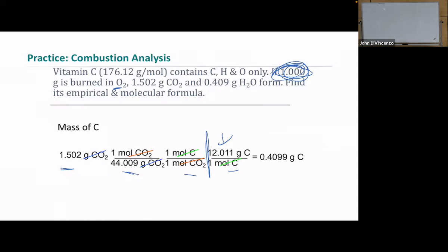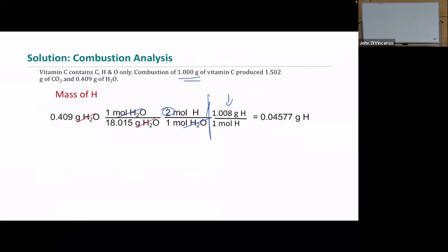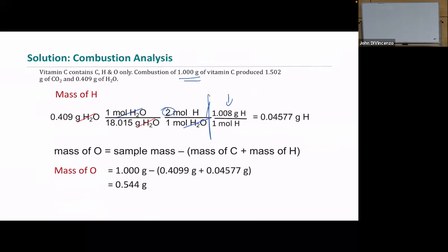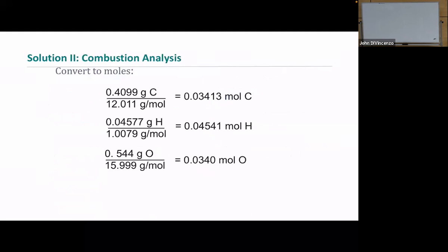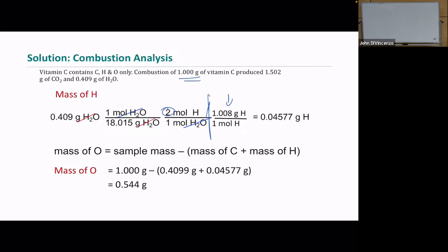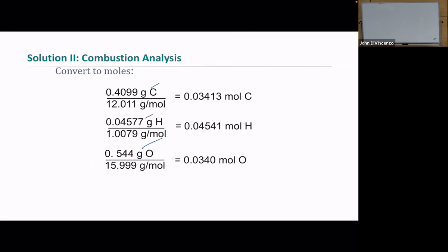We need to go back to the moles of carbon and hydrogen we calculated, and add the moles of oxygen we just derived. We have grams of carbon from the first step, grams of hydrogen from the second step, and grams of oxygen by subtraction — all divided by their respective molar masses to get moles. We skipped the percent-to-mass step since we had mass directly, but divide by smallest and multiply to a whole number are still the final steps.